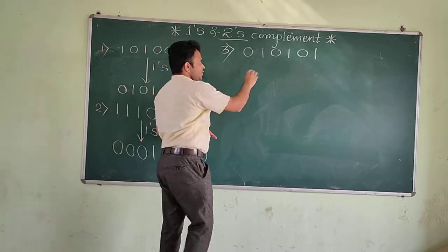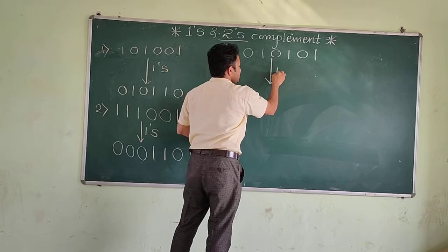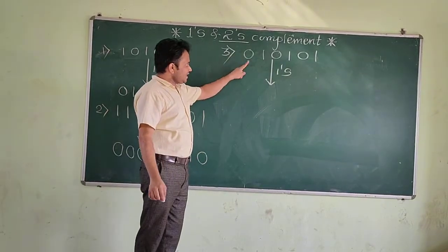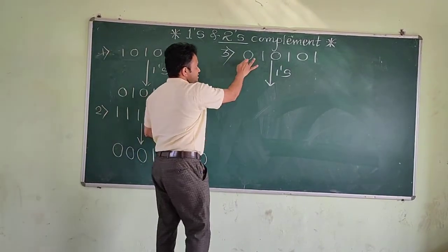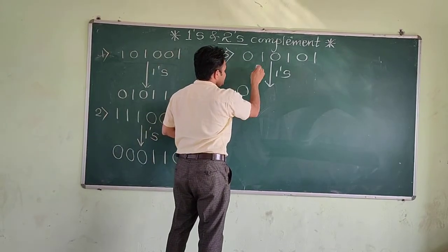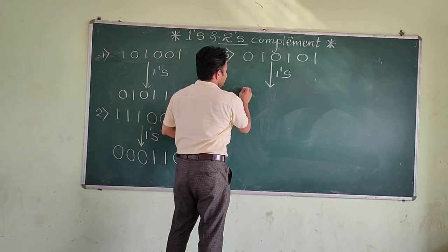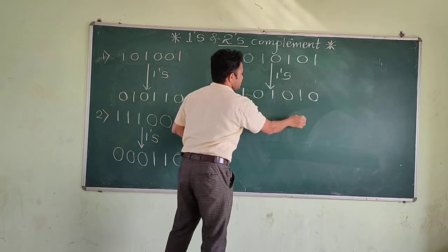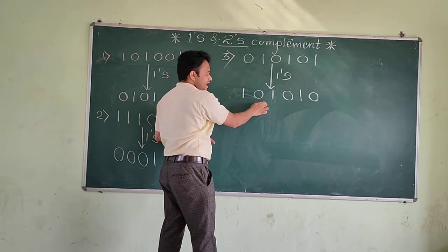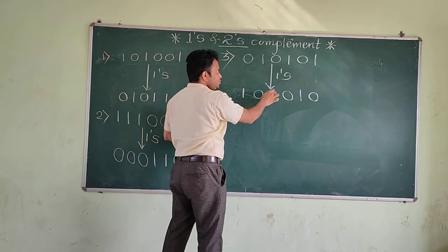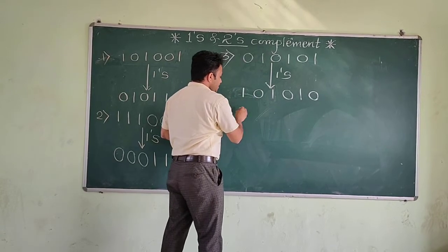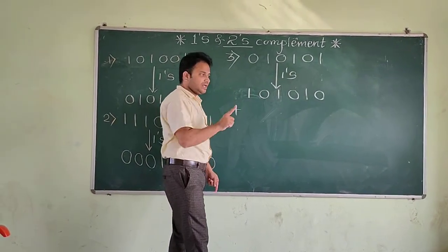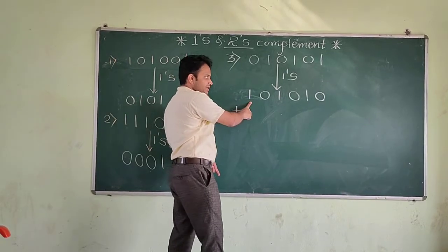The procedure to find the 2s complement is that you have to first find its 1s complement. We know how to find the 1s complement — just replace 0 by 1 and 1 by 0. So here: 1, 0, 1, 0, 1, 0. This is the 1s complement. Now, to find the 2s complement, we have to add 1 to this 1s complement.